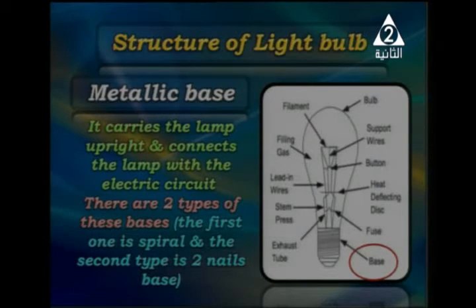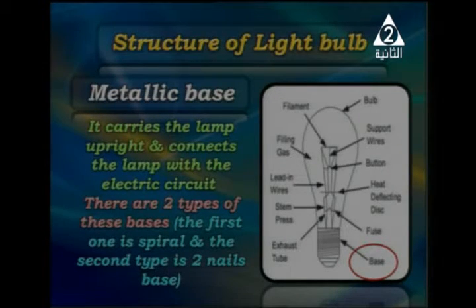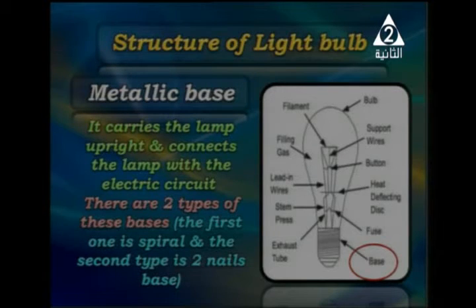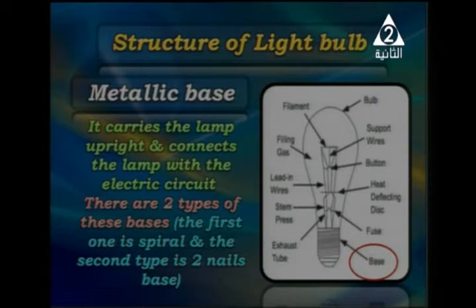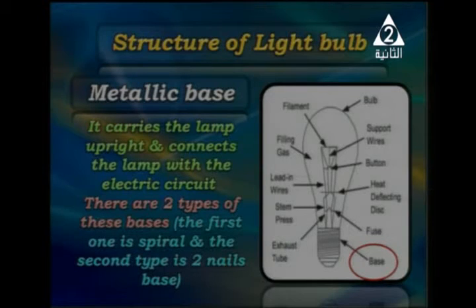The metallic base carries the lamp upright and connects the lamp with the electric circuit. It carries all the parts of the electric bulb — the glass bulb, filament, wires, exhausting tube, and more. There are two types of bases: the spiral base and the two-nail base.